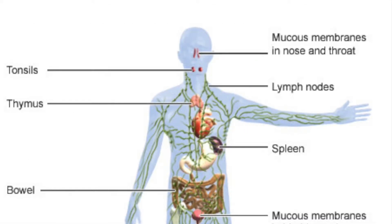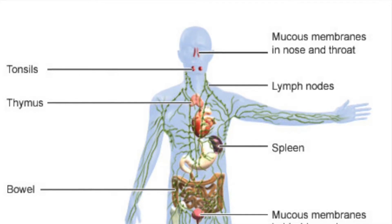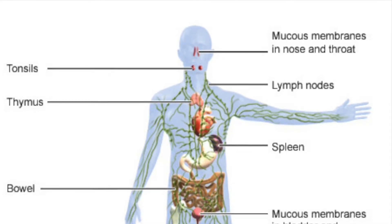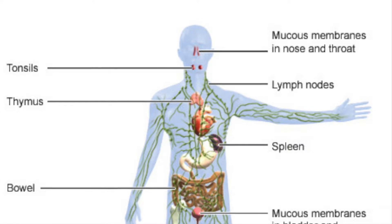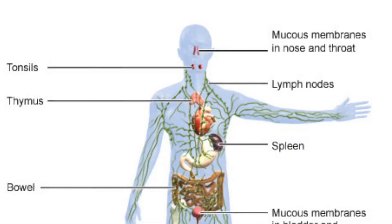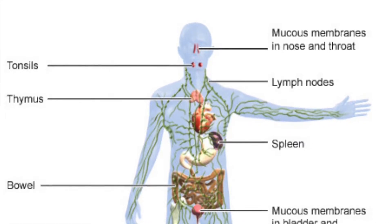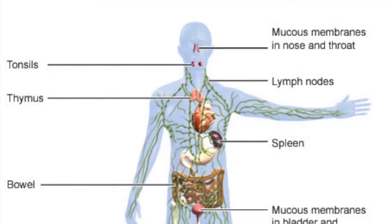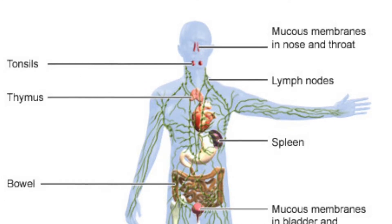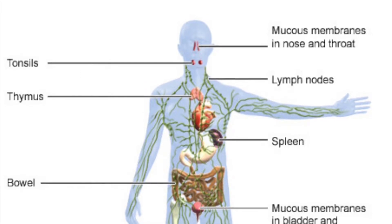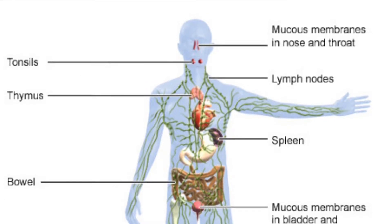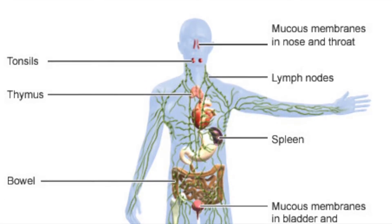The tonsils are located at the throat and the palate, and so their defense cells come into contact with pathogens especially soon. They're able to activate the immune system very quickly, as soon as any pathogens enter your mouth.